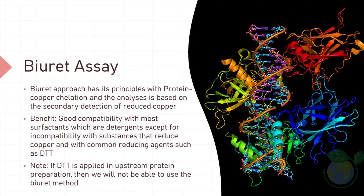Biuret Assay. The biuret approach has its principles with protein-copper chelation, and the analysis is based on the secondary detection of reduced copper. Benefits include good compatibility with most surfactants, which are detergents, except for incompatibility with substances that reduce copper and with common reducing agents such as DTT. Thus, if DTT is applied in upstream protein preparation, then we will not be able to use the biuret method.